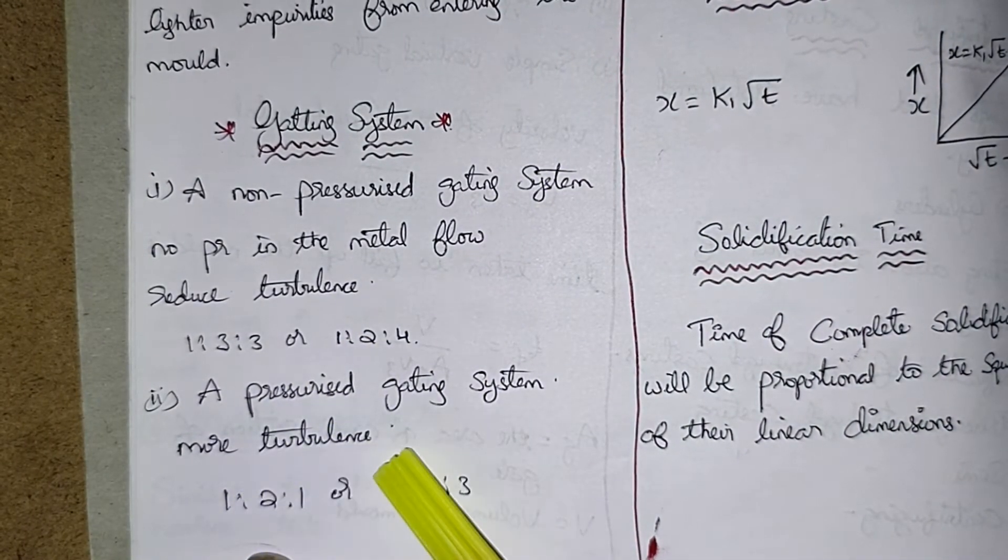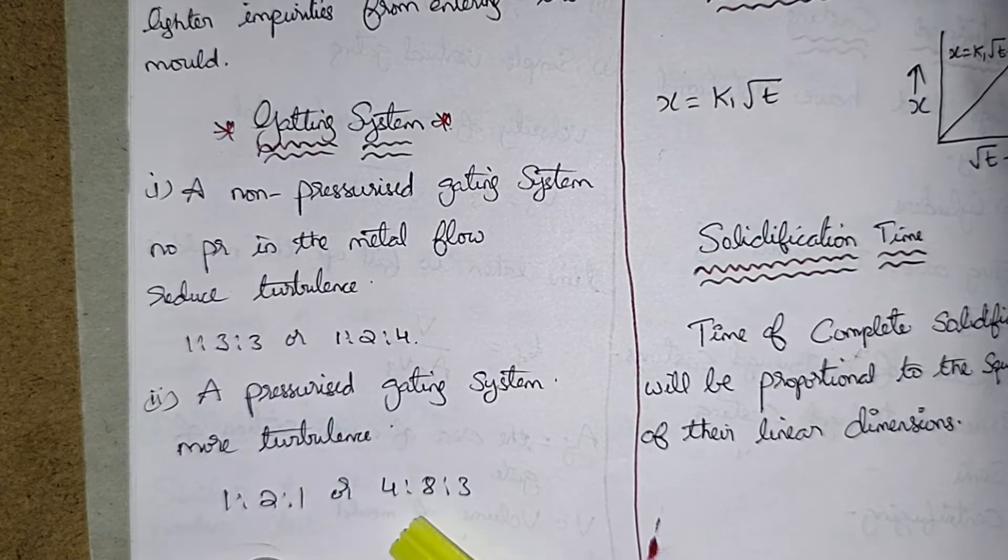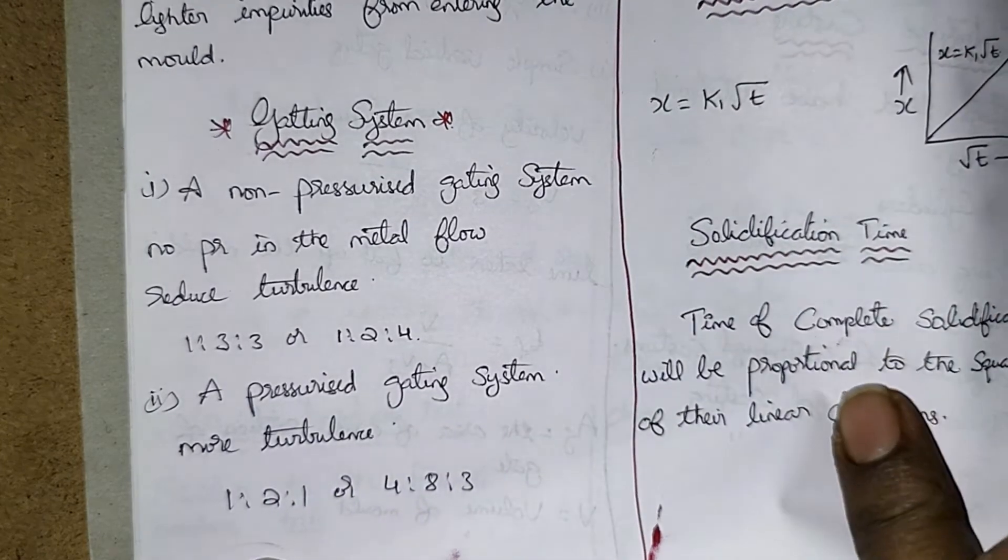A pressurized gating system - more turbulence, 1:2:1 or 4:8:3.